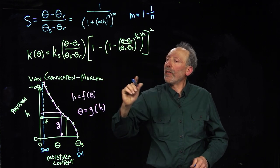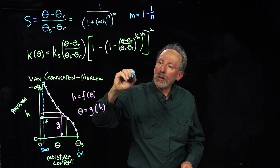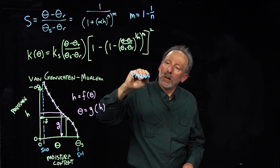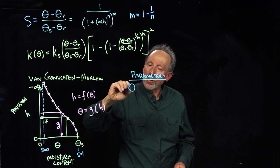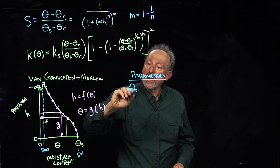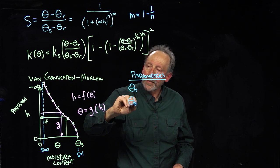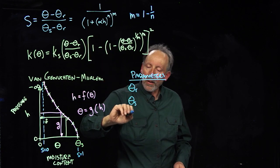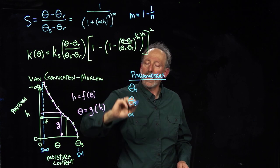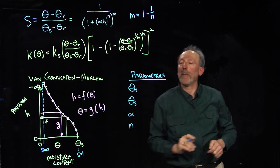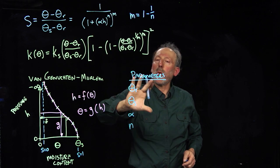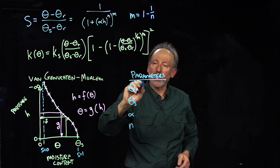So, what do we have then? We have our parameters. Start with theta residual. We have theta sat. Then we have alpha. And finally, we have n, which by the way, we can use to calculate m. So, here are the parameters that are required for the water retention function.